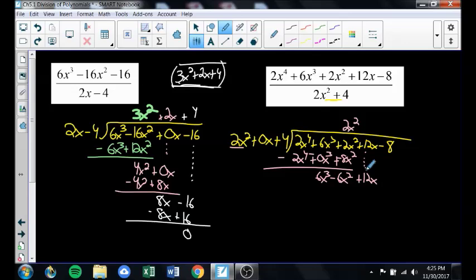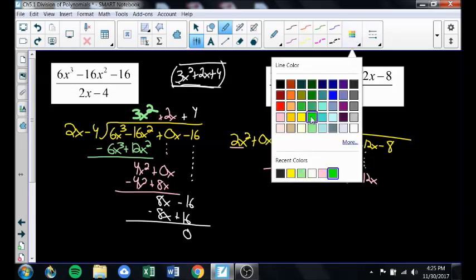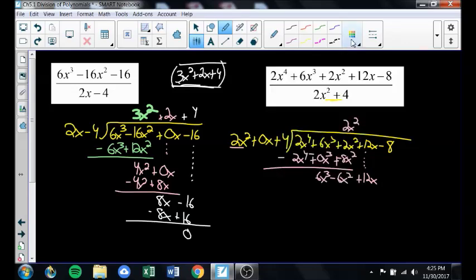Let's jump to green. 2x squared goes into 6x to the 3rd 3x times. 3x times 2x squared is 6x to the 3rd. 3x times 0x is 0x squared. And 3x times 4 is 12x. This goes into that perfectly. So I'm going to subtract all of this. Signs I'll switch, and I get a whole bunch of zeros. That's kind of sweet. Then I just drop down to negative 8.